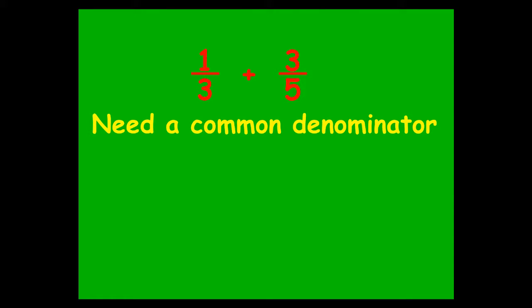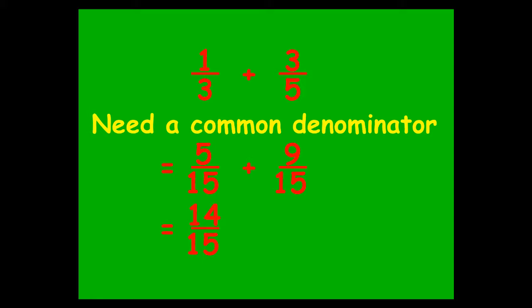One third plus three fifths — your new common denominator can be fifteen. For the first fraction, you've multiplied the bottom by five to get fifteen, so one times five is five. For the second fraction, five times three is fifteen, so three times three makes nine. You have to make sure what you do to the denominator is the same as what you do to the numerator to ensure your fractions are equivalent. You end up with an answer of fourteen over fifteen, because your fractions now share a common denominator.